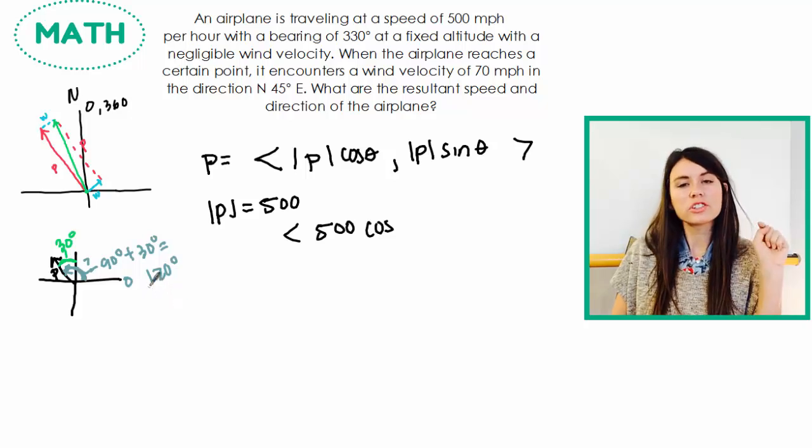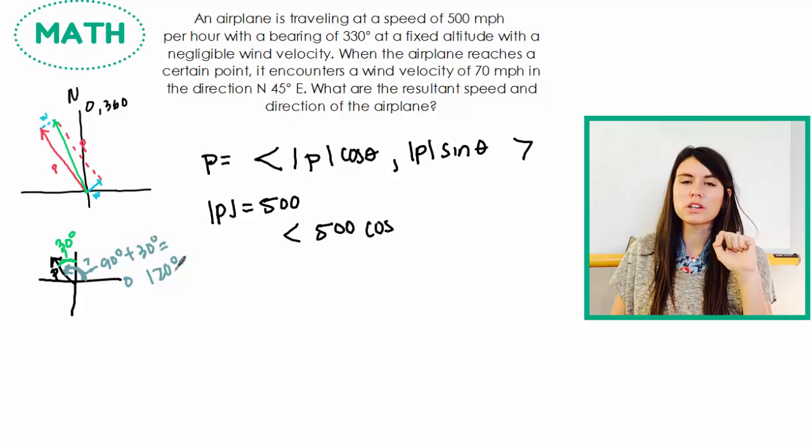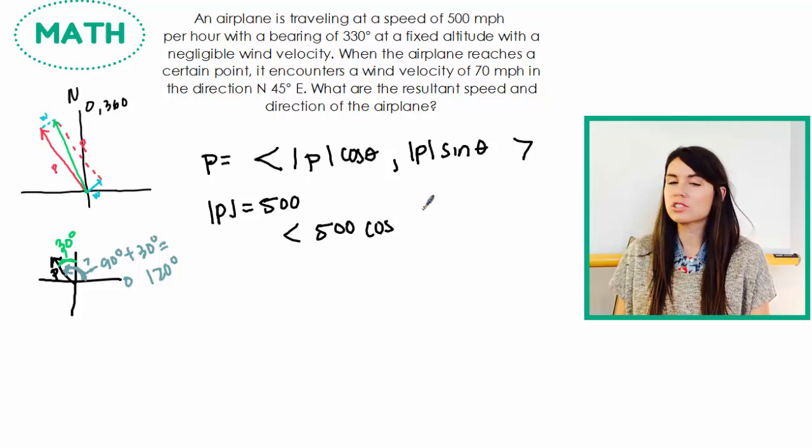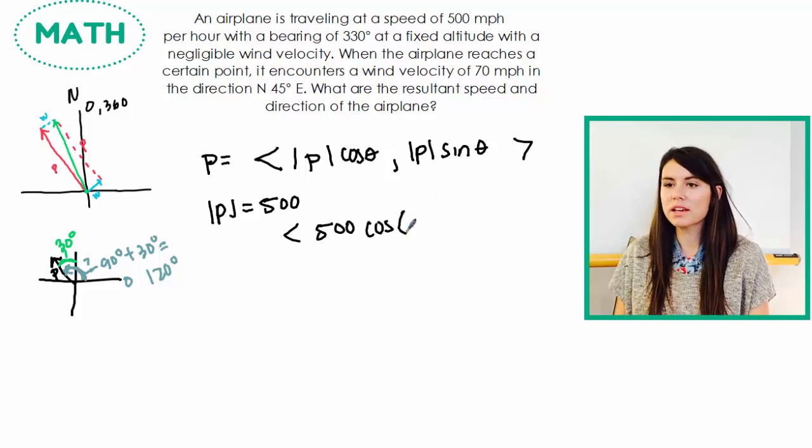So 330 degrees as a bearing is 120 degrees on the unit circle. And our formula needs us to plug in the unit circle measures, not the bearings. So I plug in 120 to both sine and cosine.